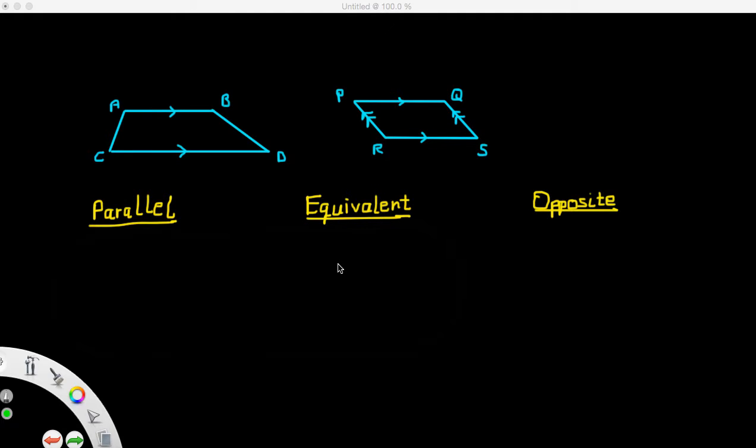Welcome back everybody. In this video we're going to learn a little bit more about vectors. When we consider vectors in pairs, they can be any of the three following types: parallel, equivalent, or opposite.